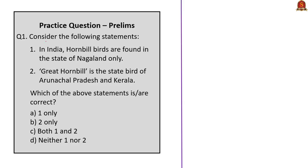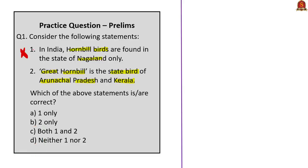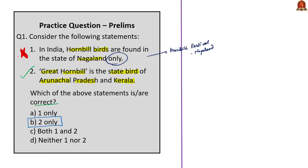The first question is: consider the following statements. Statement 1: In India, hornbill birds are found in the state of Nagaland only. Statement 2: The Great Hornbill is the state bird of Arunachal Pradesh and Kerala. The first statement is wrong — as discussed in our article, hornbills are found across India. One can easily get confused since the Hornbill Festival is celebrated in Nagaland. Also, always double-check when only is given in a statement. The second statement is correct — the Great Hornbill is the state bird of two states, namely Arunachal Pradesh and Kerala. The correct answer is option B, 2 only.